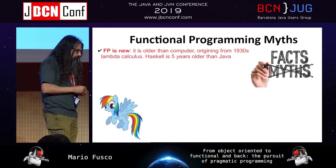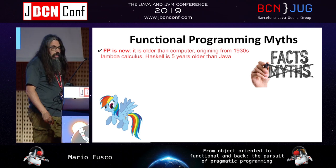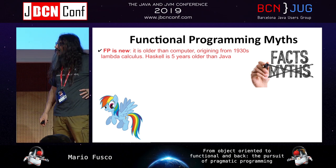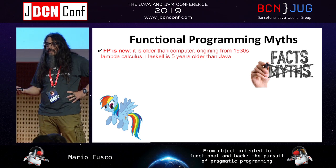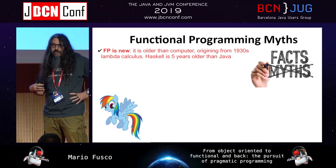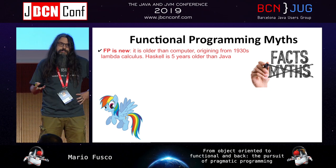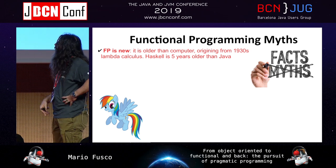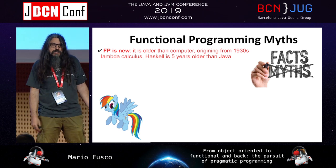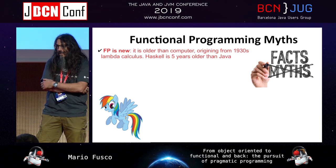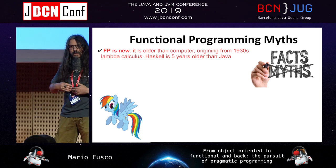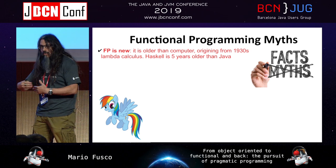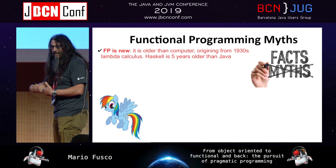There are many myths about functional programming too. We think it's something new, but actually it isn't. The theory is about 83 years old now. And Scala is five years older than Java, so it's not something new. It's something we started doing in the last few years, which is why we feel it's new, but it isn't.